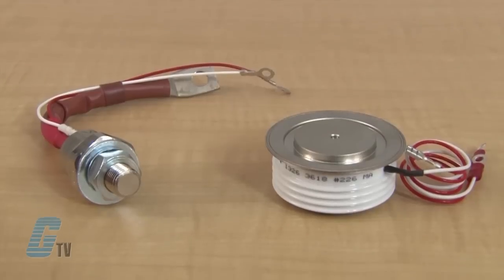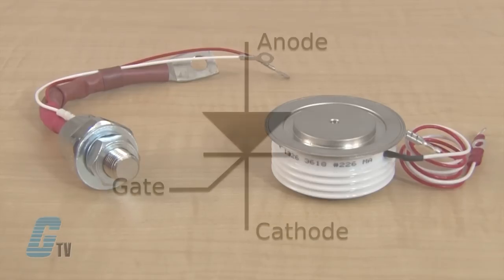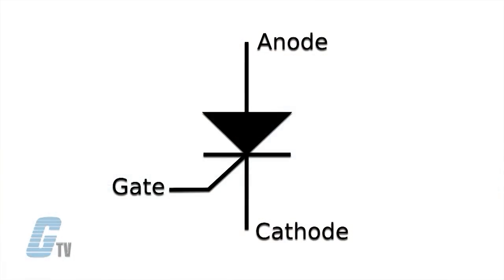It is a unidirectional semiconductor similar to a diode, which allows for the current to flow in only one direction. It differs from a standard diode by having a third connection called a gate that controls when the SCR turns on.